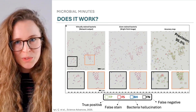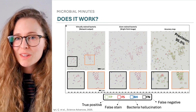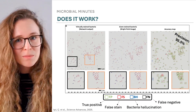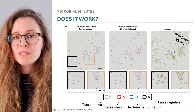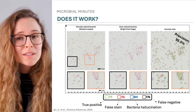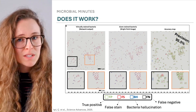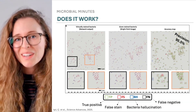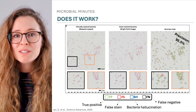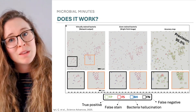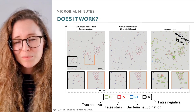Quantitative evaluation of the virtual staining method supported these results. The model made mostly true positive predictions for each bacterial cell — that is, predictions that matched the chemically stained images — with few false negative and false staining predictions, which, respectively, describe when a bacterium is present in the chemically stained image but is missed by the model, or is stained incorrectly by the model.